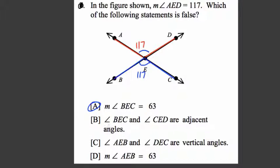But let's look at the others. BEC and CED are adjacent angles. Well, BEC is here, and CED is here. Those are adjacent angles. They're next to each other.